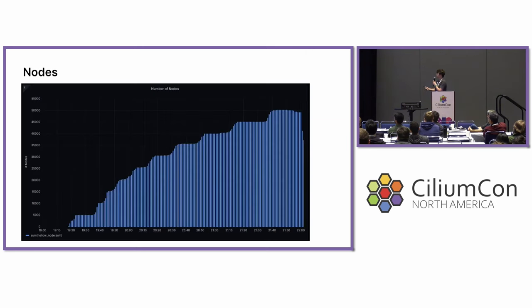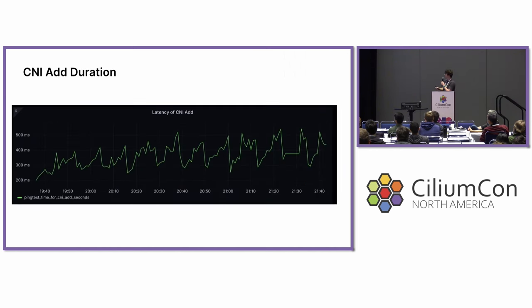So let's get into the results. These are the number of nodes we had over time during our test — we got to just above 50,000, and this took about three hours. Our CNI add duration wasn't too interesting — it had some spikes pretty much everywhere, but it had a slow linear trend of increasing that felt pretty normal, so we just moved on.